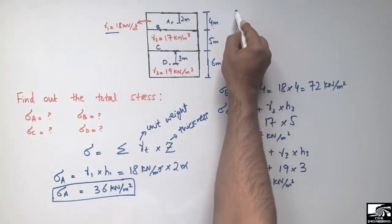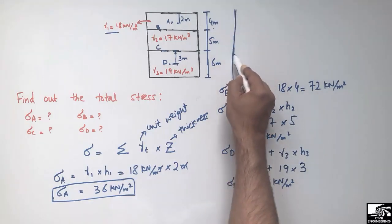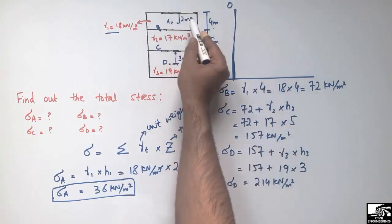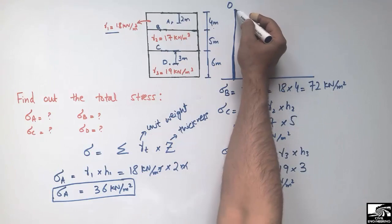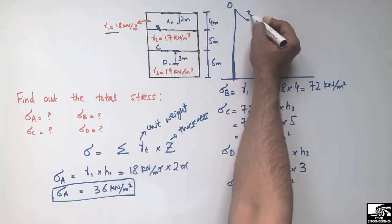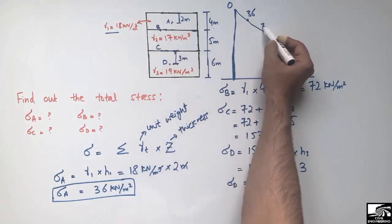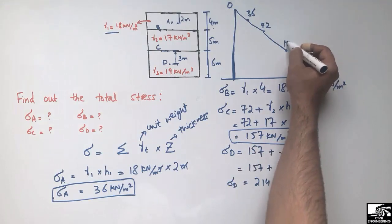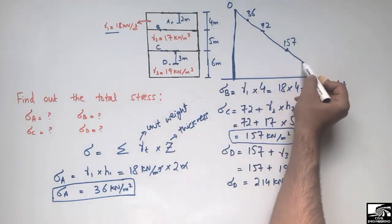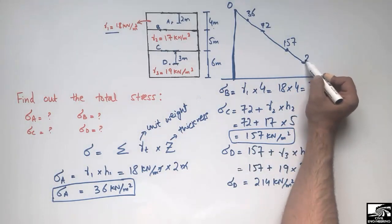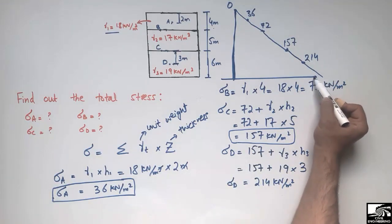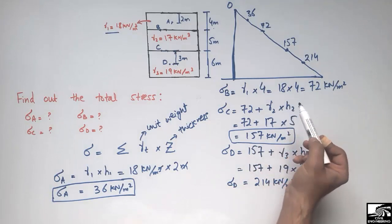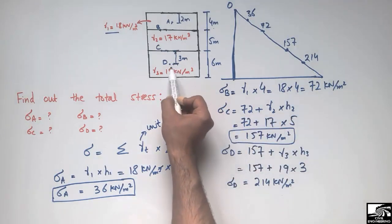Now to draw the stress diagram: using a reference line, the stress starts at 0 at the surface since there is no load acting there. At point A it is 36 kN/m², at point B it is 72 kN/m², at point C it is 157 kN/m², and at point D it is 214 kN/m². As expected, stress increases with depth. Any intermediate value can be found by multiplying unit weight with depth and adding the stress from above.